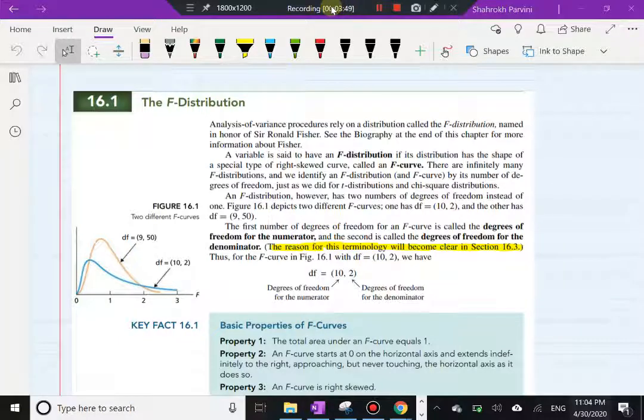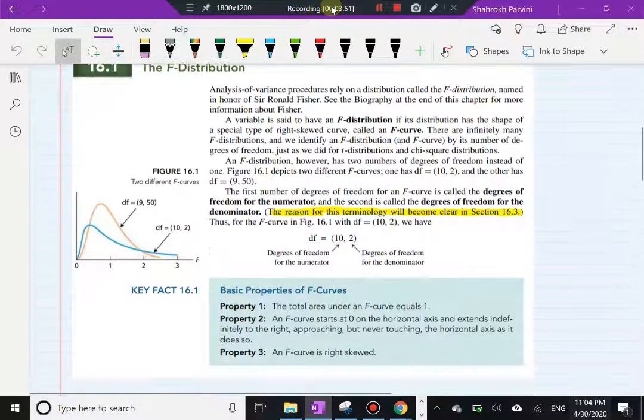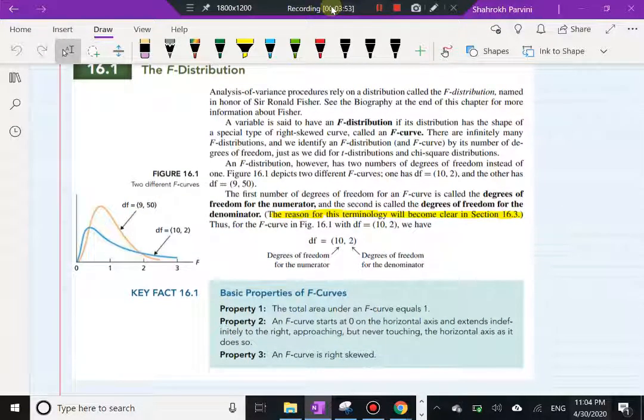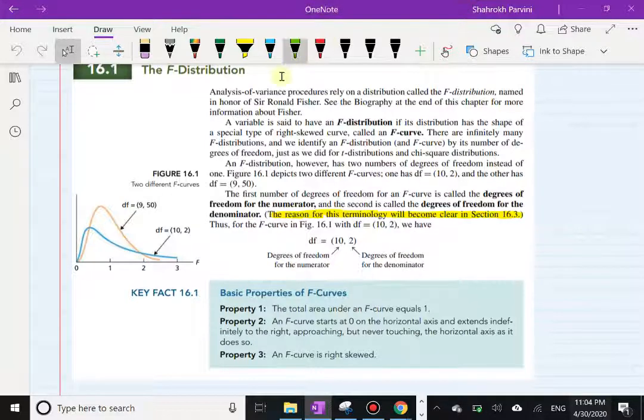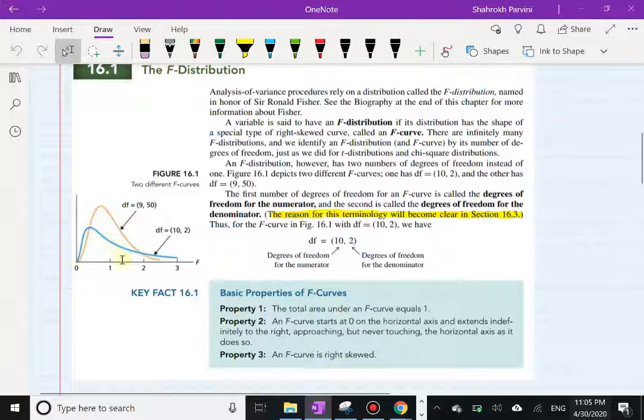Now some of the properties of this F distribution—because this is a probability distribution, the area under the curve represents probabilities just like the T and the normal distribution did, and the entire area under the curve is 1, meaning 100%.